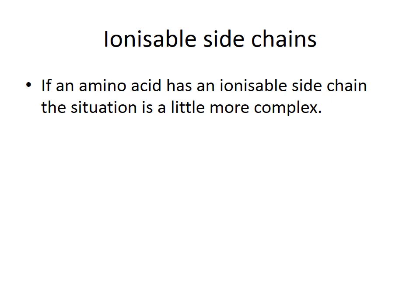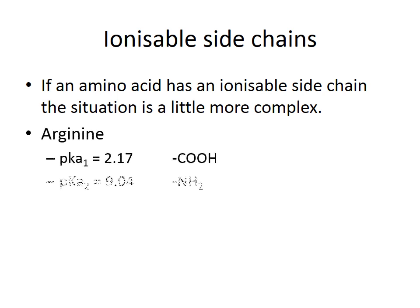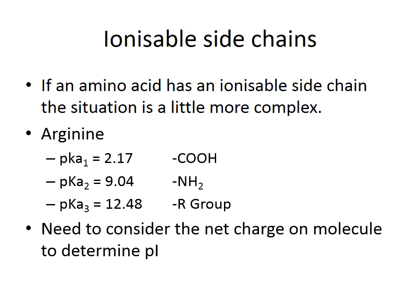If an amino acid has an ionisable side chain, the situation becomes more complex. Using arginine as an example, it has three pKa values: 2.17 for the carboxyl group, 9.04 for the amino group, and 12.48 for the side chain R group. We need to consider the net charge on the molecule at different pH values in order to determine the isoelectric point — where arginine has no net overall charge.